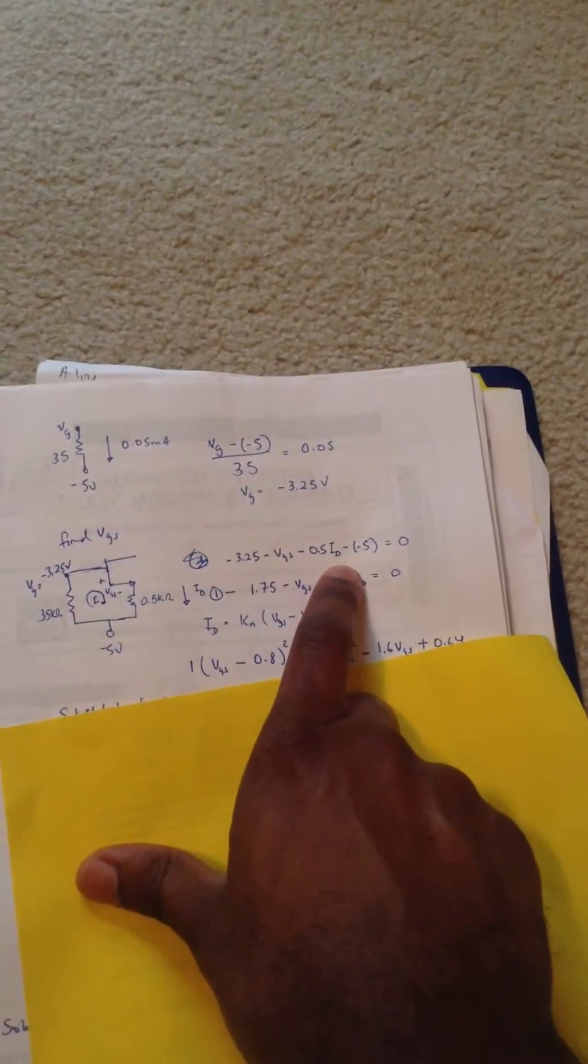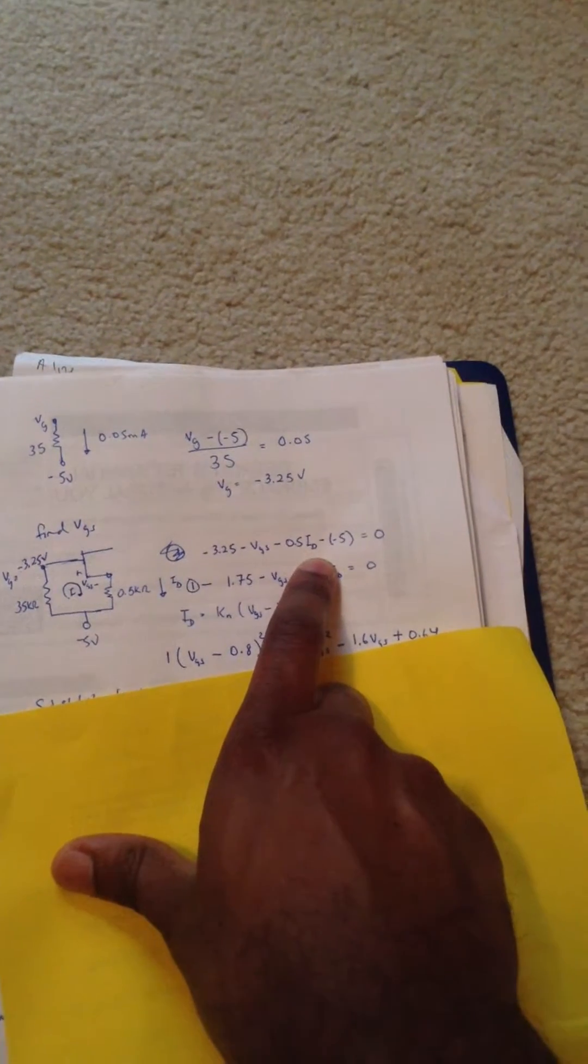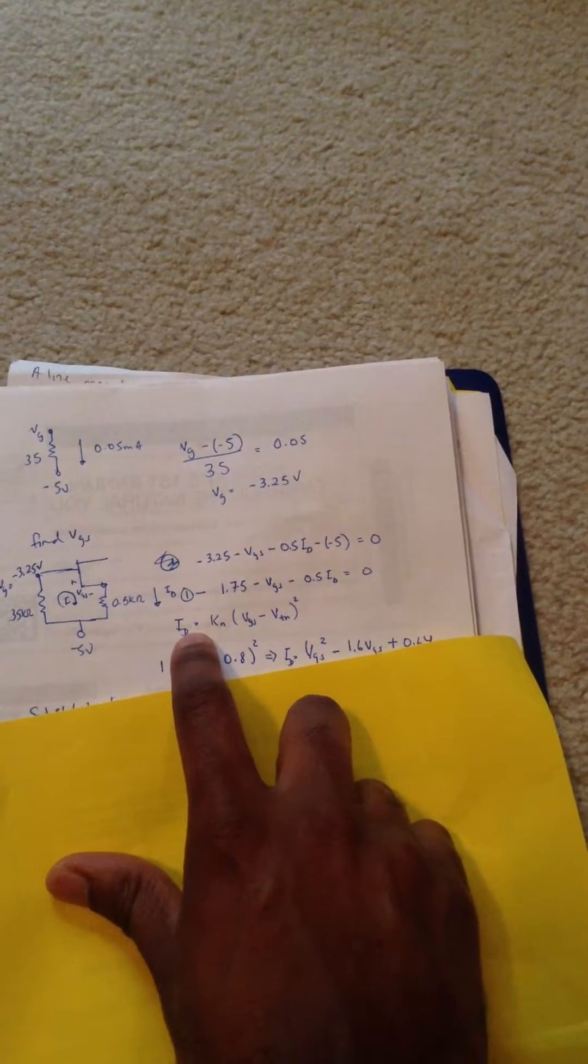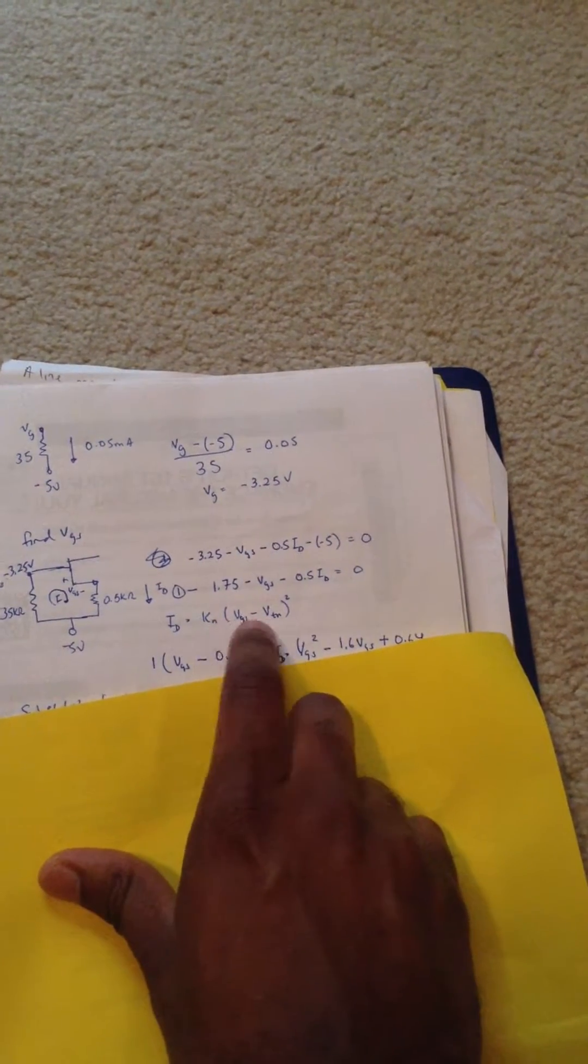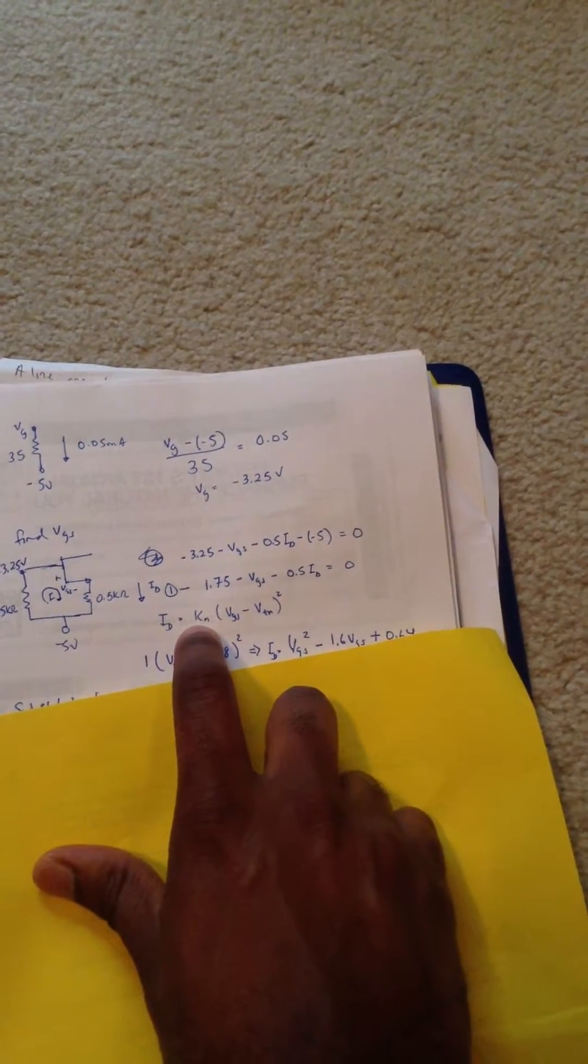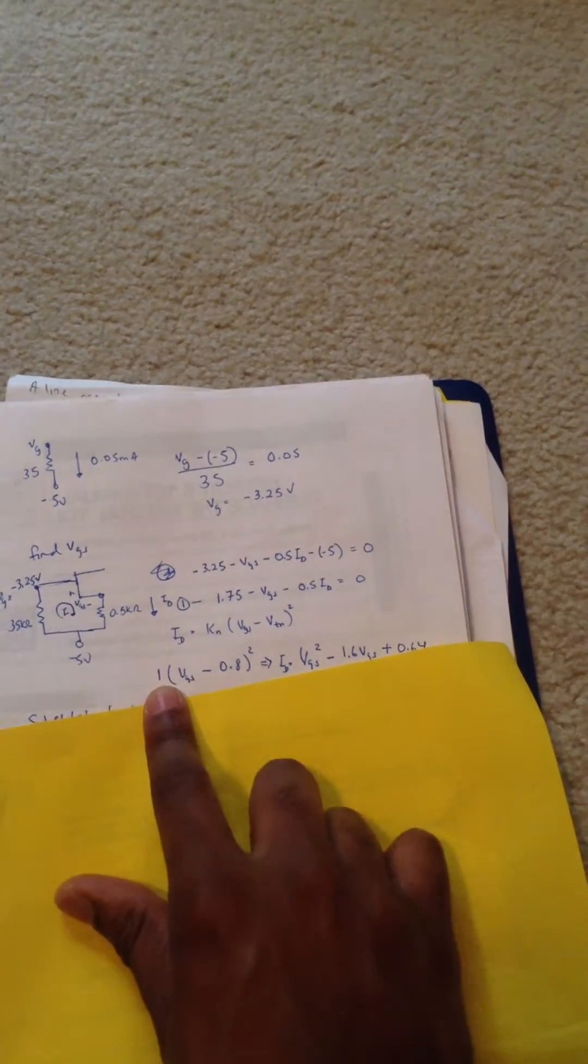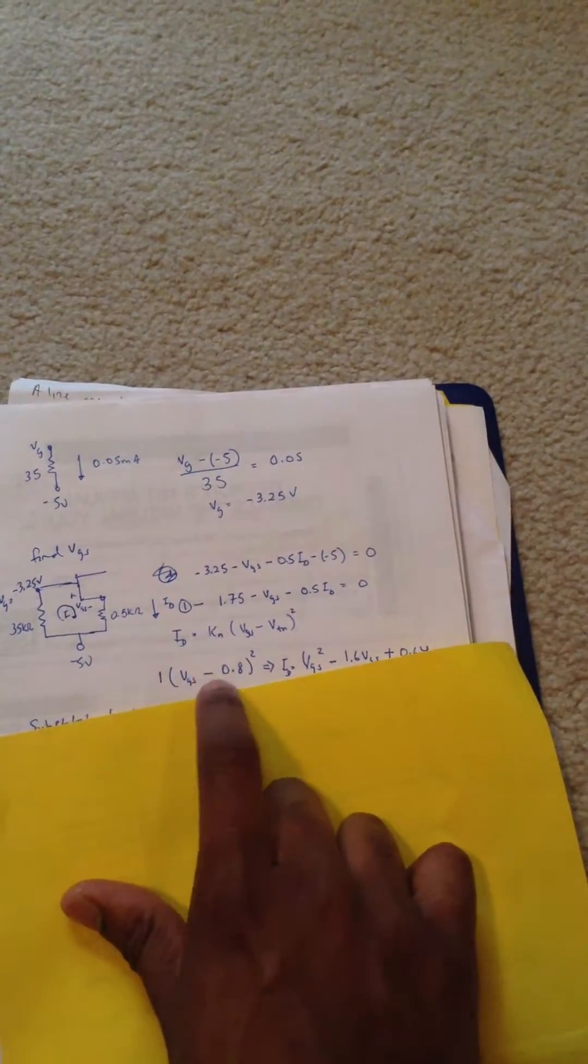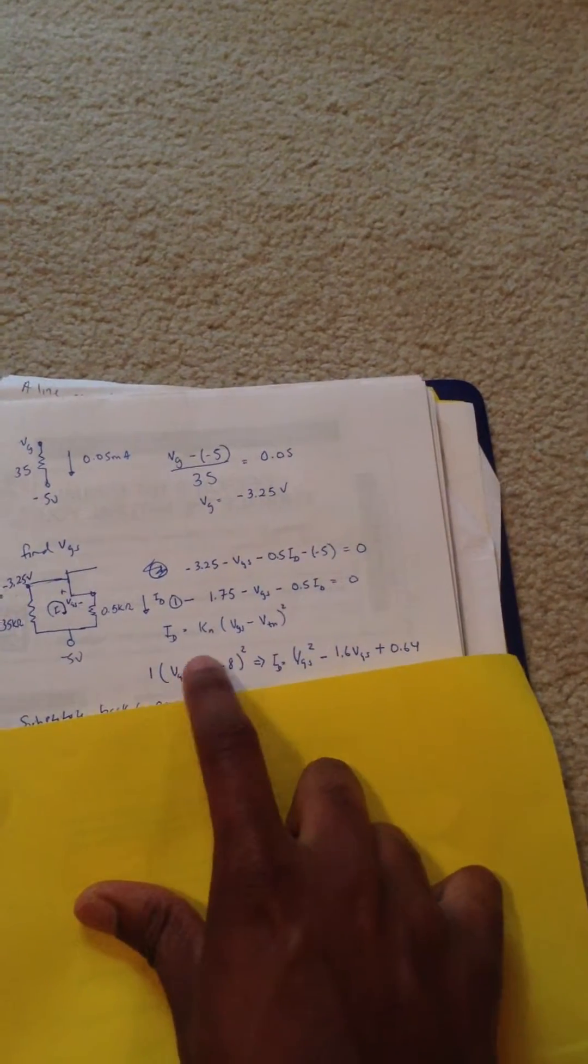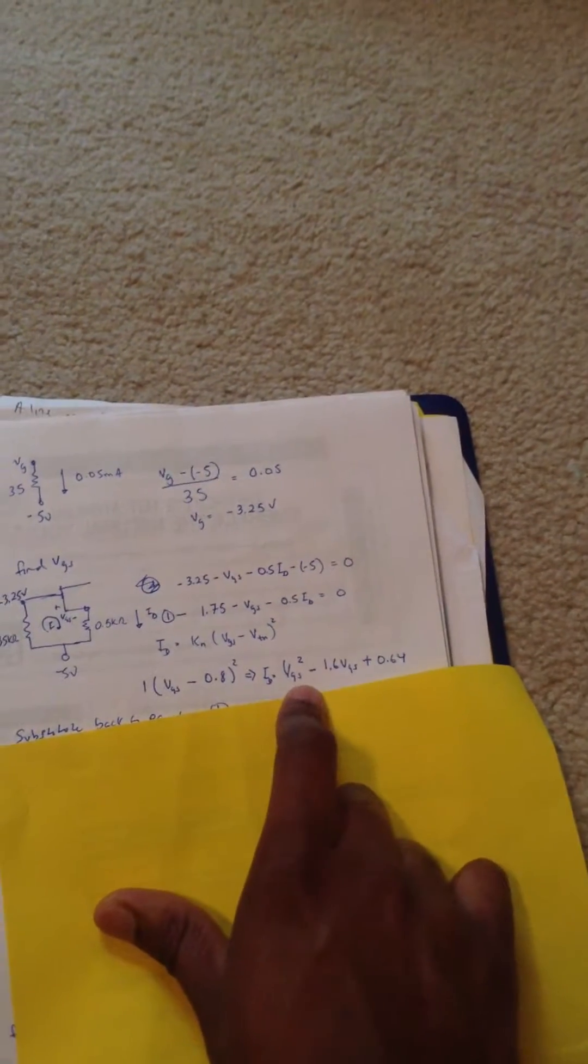But we can solve for ID assuming we're going to make an assumption that this transistor is in saturation. When it's in saturation, ID is given by this equation. We're going to plug in our values. We're given KN and we're given the threshold voltage. So we're going to plug those values in, which is what's done here. And then we're going to simplify this, which simplifies to this. We basically just used FOIL to get this.